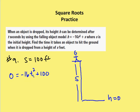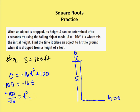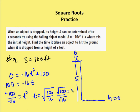We isolate t: subtract 100 from both sides to get negative 100 equals negative 16t squared, then divide by negative 16 to get 100 over 16 equals t squared. So t equals the square root of 100 over 16. Using the quotient property, that's the square root of 100 over the square root of 16, which is 10 over 4. Therefore t equals 5 over 2, or two and a half seconds.